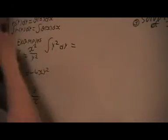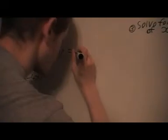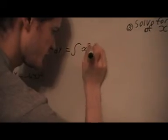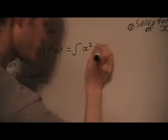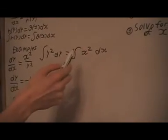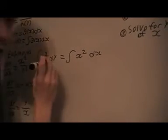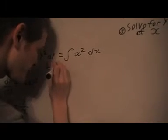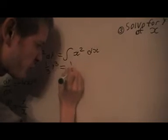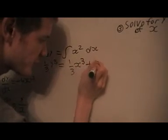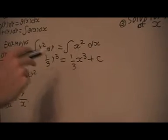And remember, these are both going to be integrals—I'm just separating the variables. So that's what we'll get when we separate the variables, and then we're going to integrate both sides and get 1/3 y³ equals 1/3 x³ plus c.